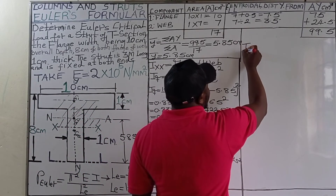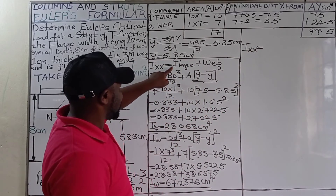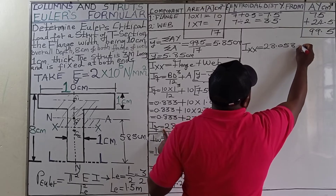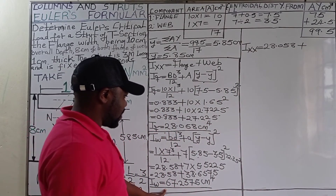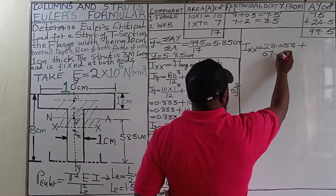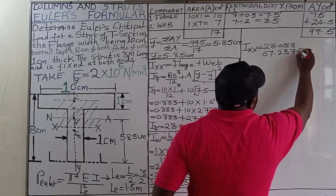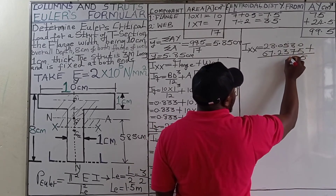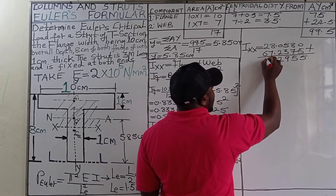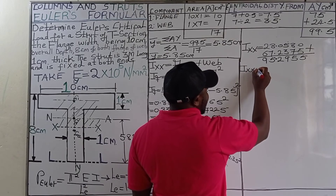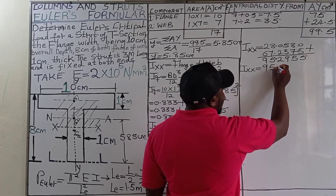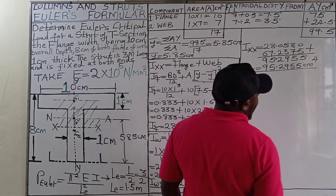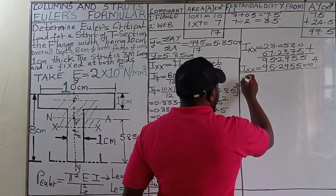The total moment of inertia about the XX axis is the moment of inertia of the flange plus that of the web: 28.058 + 67.2375 = 95.2955 cm⁴. This is the moment of inertia of the T-shaped section of the strut about the XX axis.